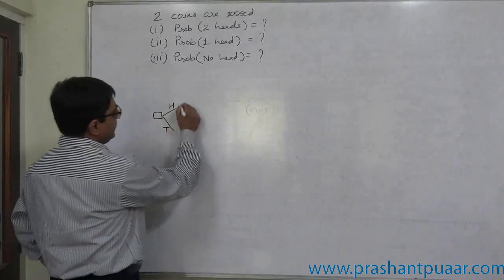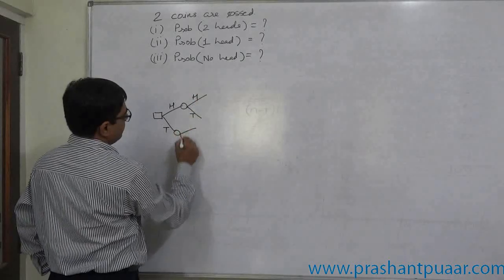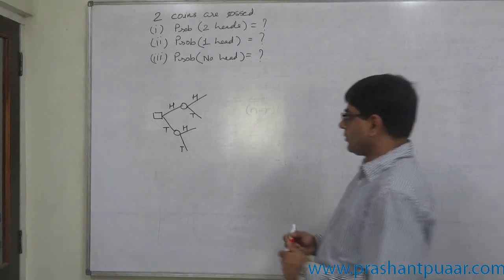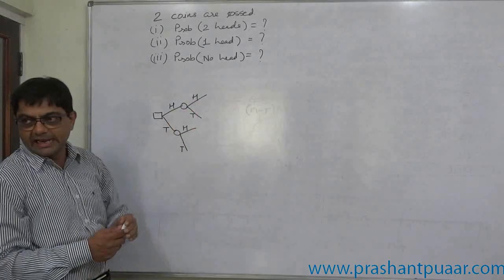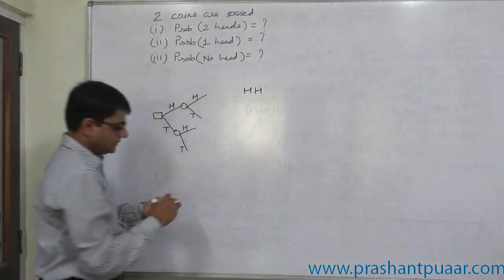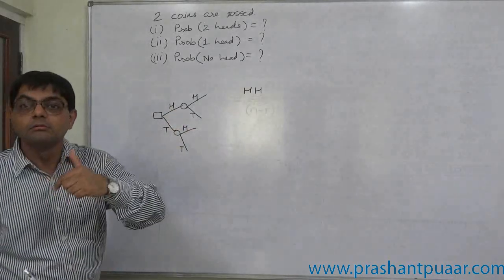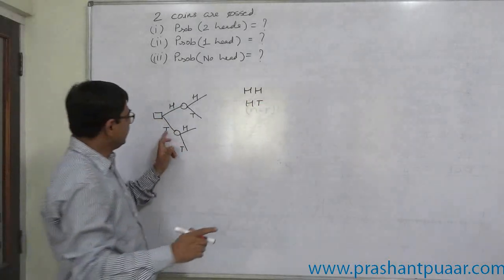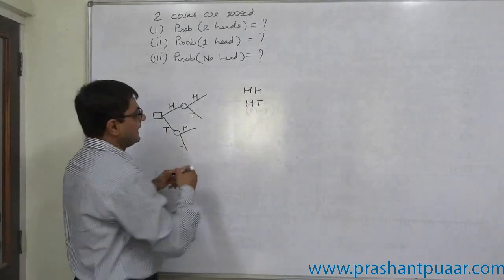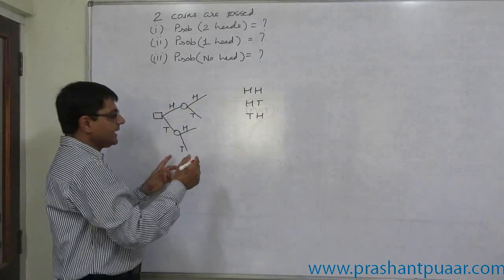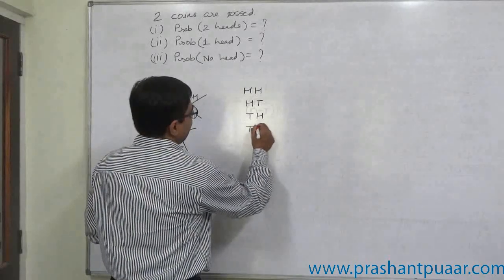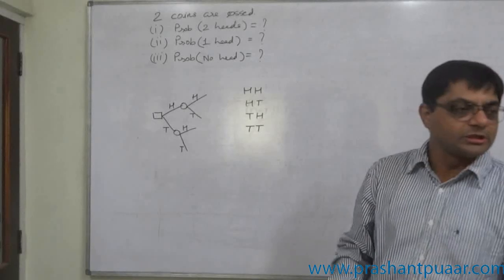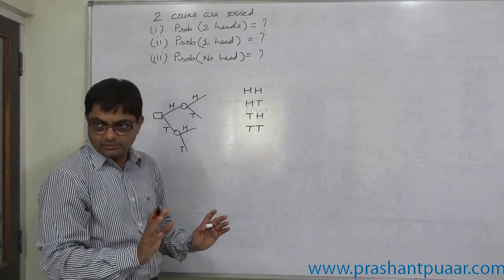First coin: head or tail. Then second coin: head or tail. These are the possible situations. Head on the first coin and head on the second. Head on the first, tail on the second — this is another possible event. Or tail on the first coin and head on the second — tail and head. And the last possibility is tail on the first and tail on the second — tail and tail. So, in an experiment of tossing two coins, there are four possible outcomes. Total number of possible outcomes is four.